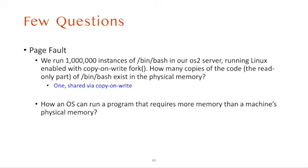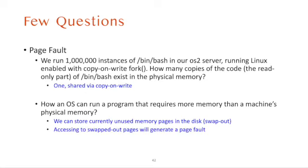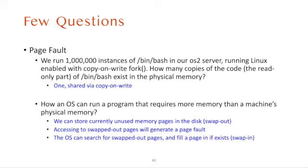Next: how can an OS run a program that requires more memory than the machine's available physical memory? This question is asking about memory swapping. To do that, we store currently unused physical pages to disk as swap-out. When the program then accesses a swapped-out page, it generates a page fault. The OS handles this by looking up the fault address on disk, and if it exists, swaps it back in. Continuing execution lets the user application run seamlessly, because when the application resumes, the virtual address is now backed by a physical page.